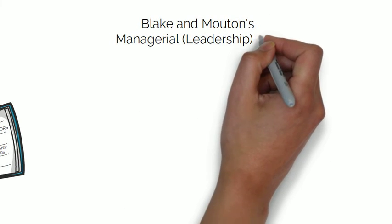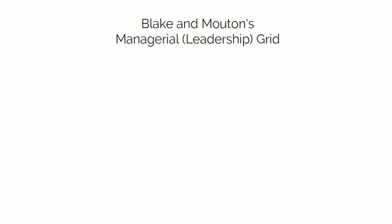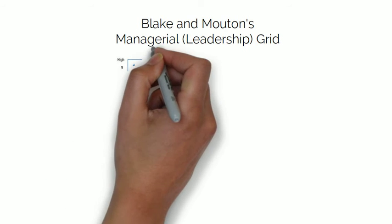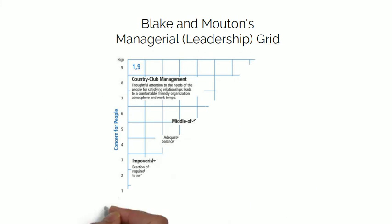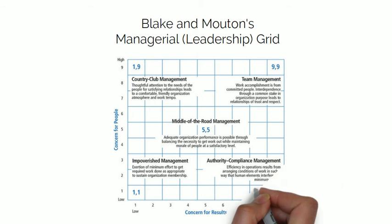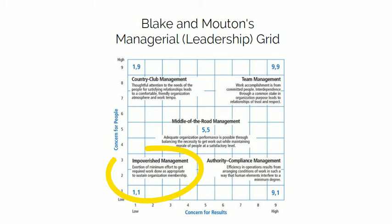The managerial leadership grid's purpose was to explain how leaders help organizations to reach their goals. The grid is based on both the leader's concern for people — relationships plotted on the y-axis — and production or tasks plotted on the x-axis. At position 1,1, impoverished management: exertion of minimum effort to get required work done as appropriate to sustain organization membership. The leader has little contact with followers and is described as indifferent, non-committal, uninvolved, and apathetic.